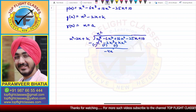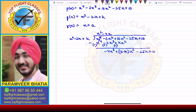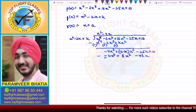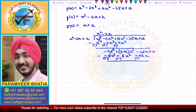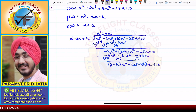After subtraction you get minus 4x³ plus (16 minus k)x² minus 25x plus 10. The next quotient term is minus 4x. We multiply: minus 4x into x² minus 2x plus k gives minus 4x³ plus 8x² minus 4kx. When we subtract, signs change, this gets cancelled, giving (8 minus k)x² minus (25 minus 4k)x plus 10.